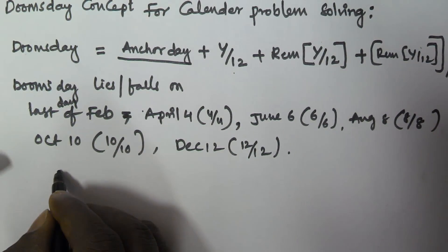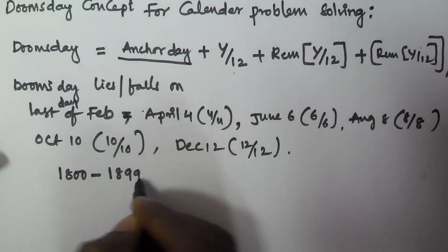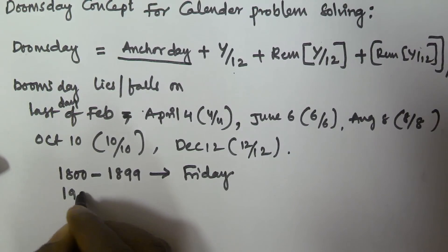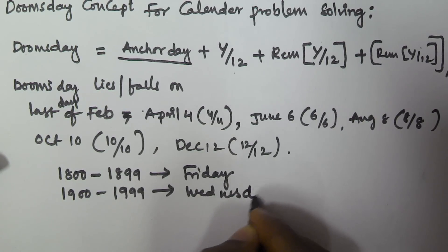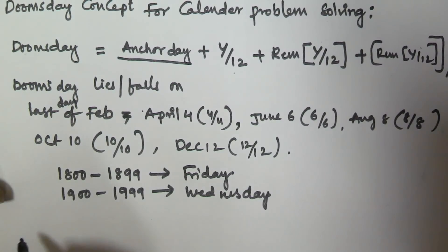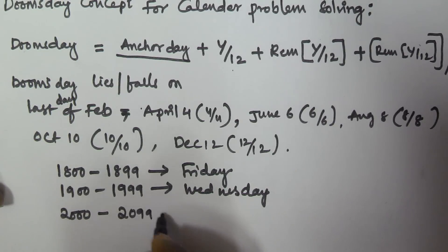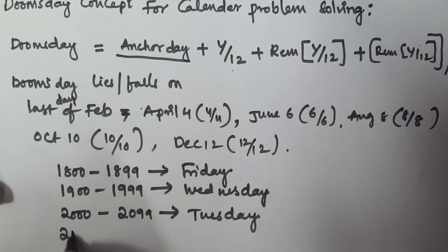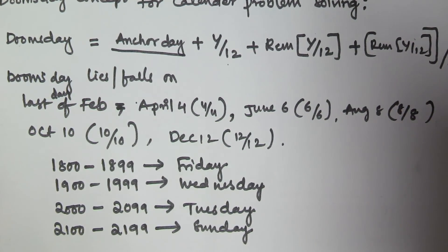Now, what is the Anchor Day? If the given year is 1800 to 1899, the Anchor Day is Friday. For 1900 to 1999, the Anchor Day is Wednesday. For 2000 to 2099, the Anchor Day is Tuesday. And for 2100 to 2199, the Anchor Day is Sunday.